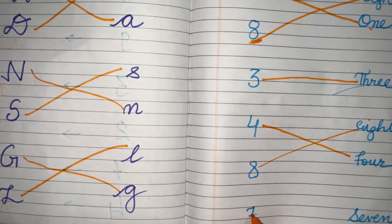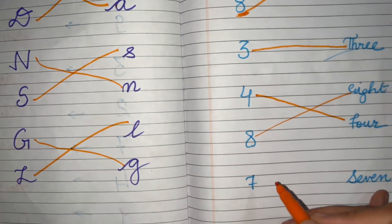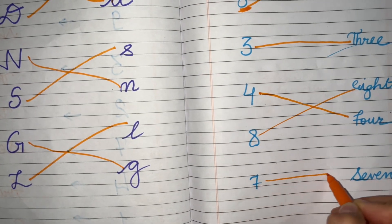Next one is 7. The spelling of 7 is S-E-V-E-N-7. So we'll match it with the 7.